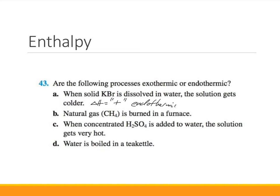Natural gas, CH4, is burned in a furnace. When you burn something it gives off heat — when you feel that heat, you are the surroundings. So the sign of ΔH here is going to be negative; this is an exothermic process. When concentrated H2SO4 is added to water, the solution gets very hot. The solution is the surroundings, therefore ΔH is negative and this is an exothermic process.